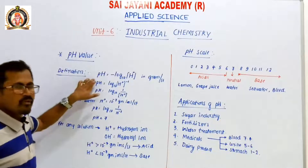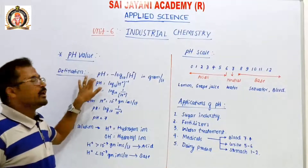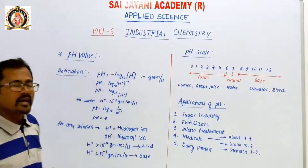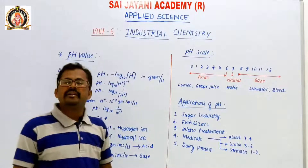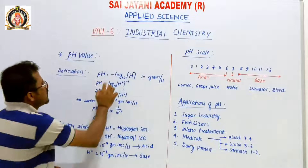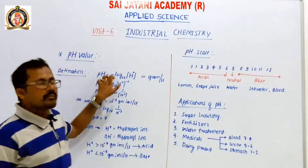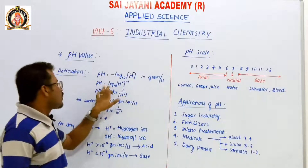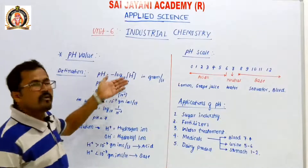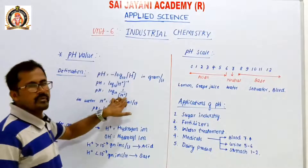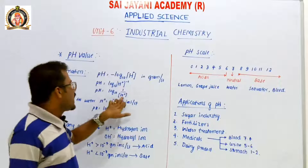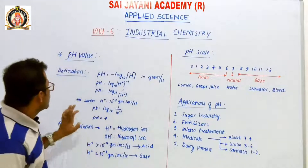So we can write that pH is the negative logarithm of hydrogen ions to the base 10, expressed in gram ions per liter of a solution. This can also be written as pH = log₁₀(1 / [H⁺]), where [H⁺] is the hydrogen ion concentration.